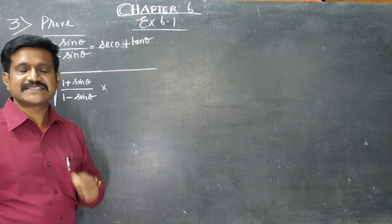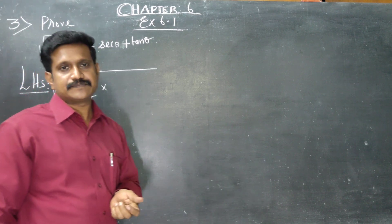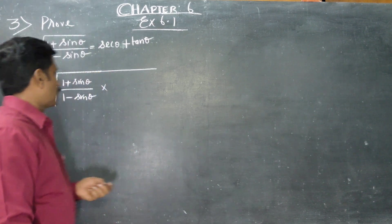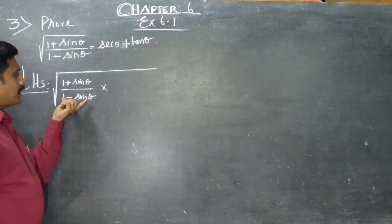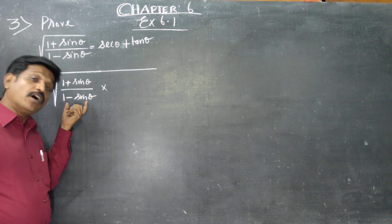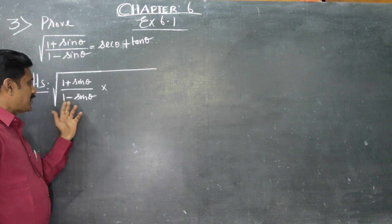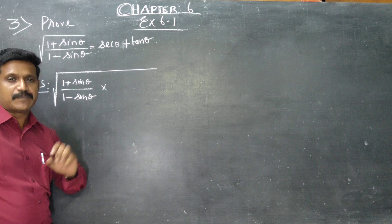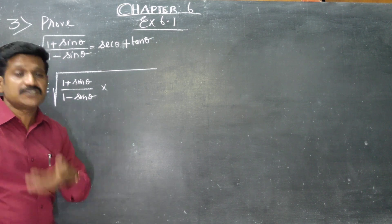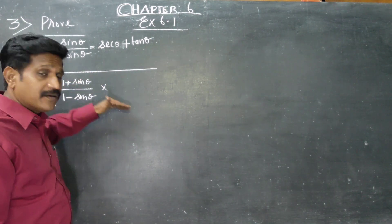Trigonometry simplification techniques. In the key, the denominator's conjugate — the conjugate of (1 minus sin theta) is (1 plus sin theta). We multiply by the conjugate.